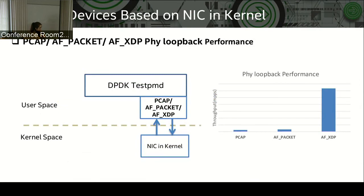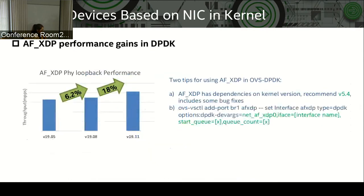This slide shows the performance comparison between these three virtual devices with five loopback test scenarios. PCAP and FPacket have been available in DPDK for a long time, and FSDP is recently implemented this year. The performance of FSDP is clearly better than PCAP and FPacket. DPDK implements AF-SDP from 19.05 to 19.11 and gains 6.2% and 18% performance improvement between each two releases.